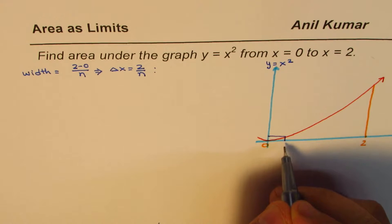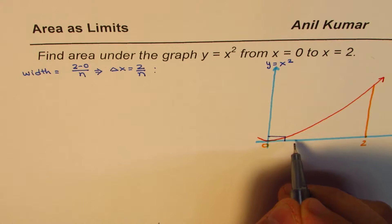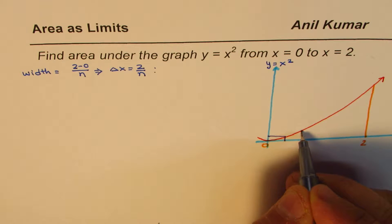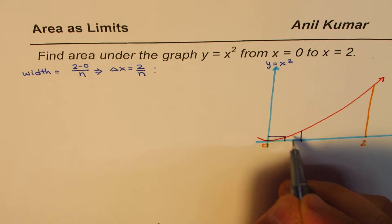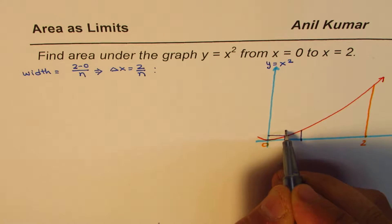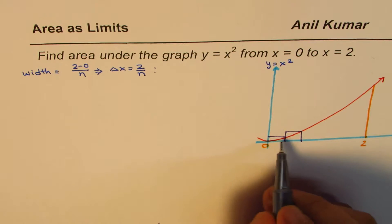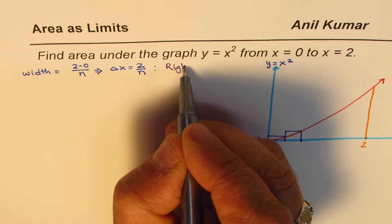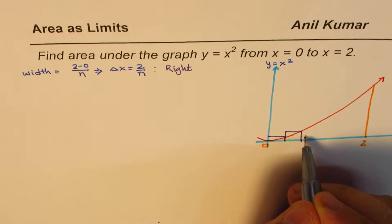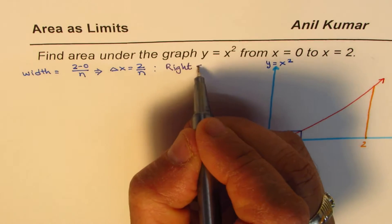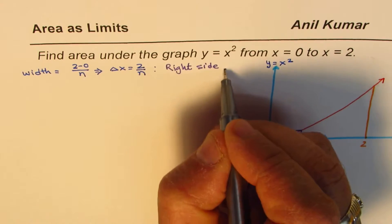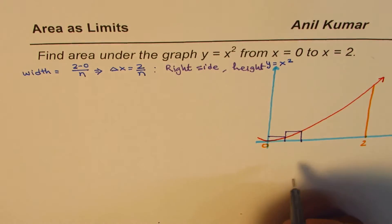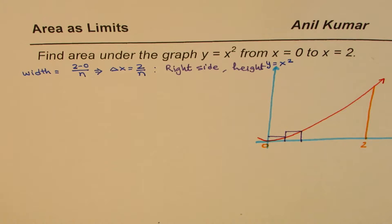The first rectangle has width 2/n. The next one will be at 4/n, and we make a rectangle like this. We will use the right side of each rectangle to find its height — the right side for height — and that is what we are going to use.